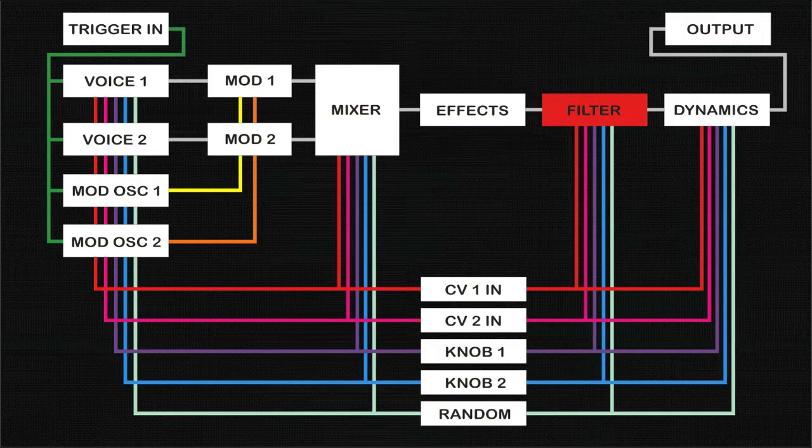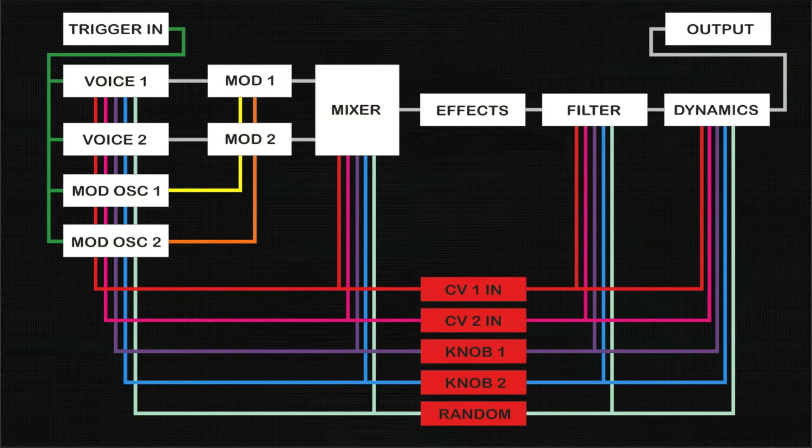The frequency of the filter can be modulated by external CV 1 or 2, knob 1 or 2, randomized, or multiple combinations of these.